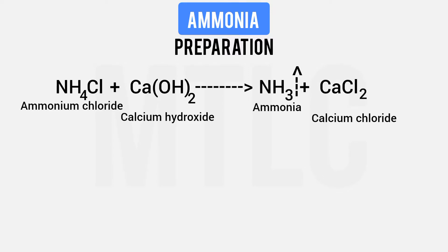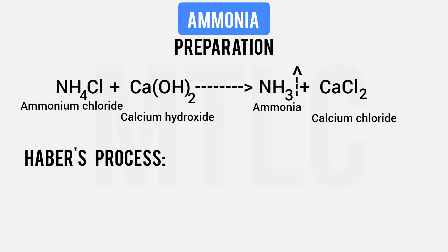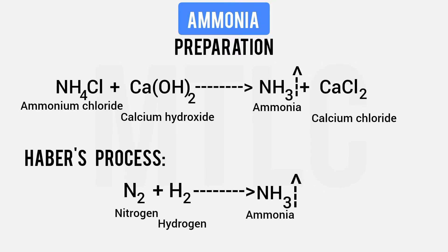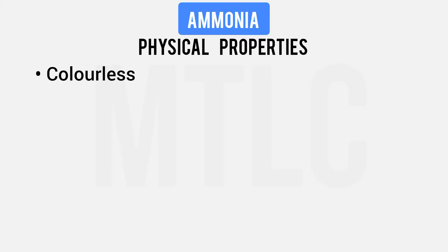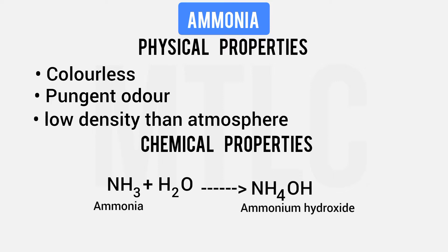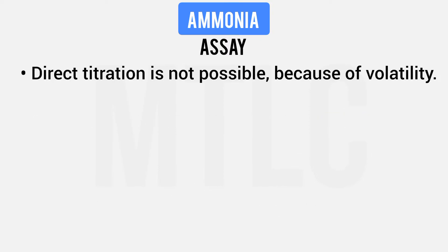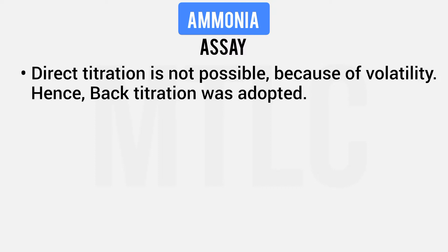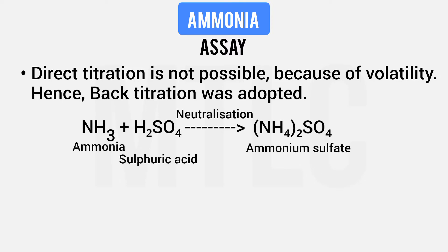Ammonia solution is prepared by adding calcium hydroxide. Industrially, the Haber's process is used for the manufacture of ammonia by combining nitrogen and hydrogen gases. Ammonia is a colorless gas with a pungent odor and is lighter than air. It is very basic in nature, and since ammonia gas is very easy to vaporize, we can perform back titration.